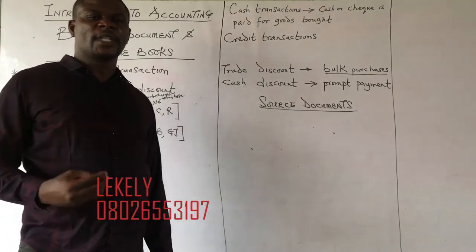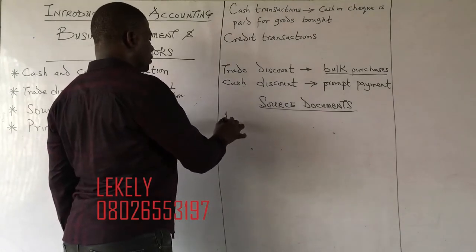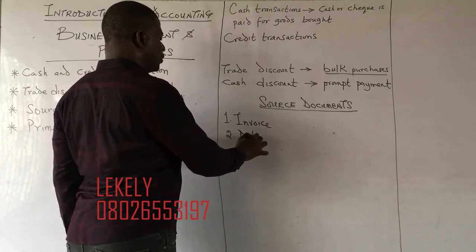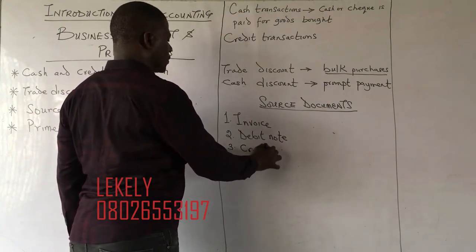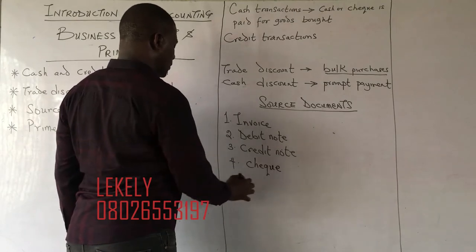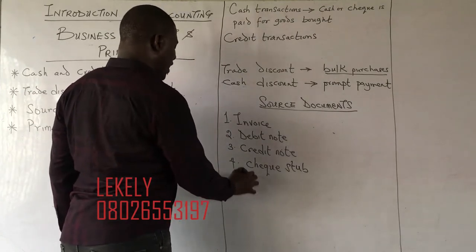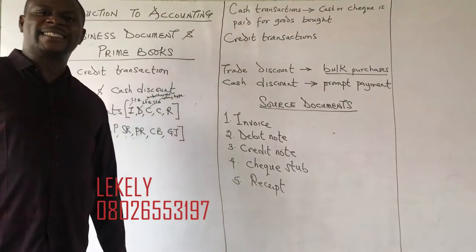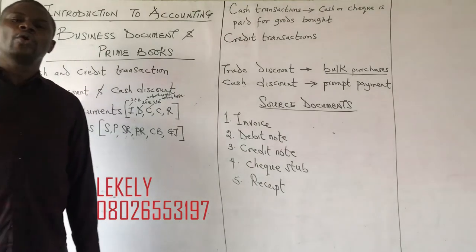Source documents are fundamental to the transactions of a business with customers. The major source documents are: number one, invoice; number two, debit notes; number three, credit notes; number four, check; number five, receipts. These are the major source documents — very fundamental to transactions of the business.